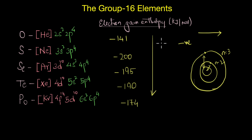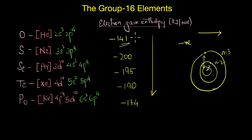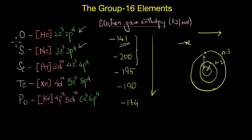As we go down the group, atomic size increases and the added electron is farther away from nuclear attraction, so less energy is released and the value becomes less negative. However, in the case of Group 16 elements there is an exception: contrary to expectation, the electron gain enthalpy value is less negative for oxygen compared to sulfur. This means adding an electron to oxygen releases less energy than adding one to sulfur — strange, given that oxygen's electronegativity is much greater than sulfur's. But we do have a valid reason for this.